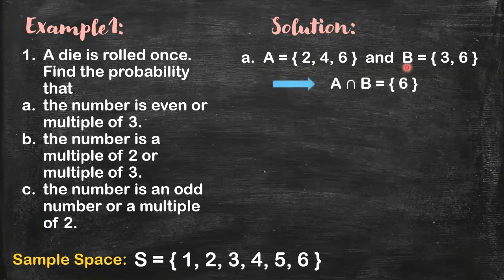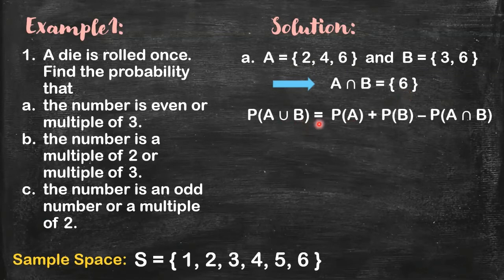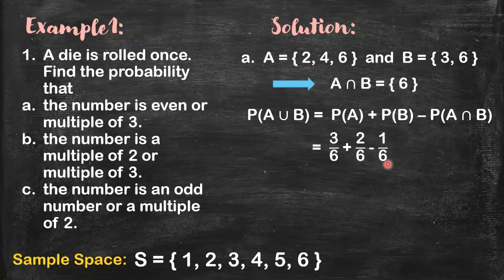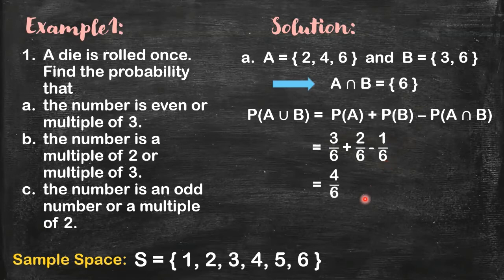And then what do you notice? They have an intersection. Their intersection contains 6. So that's why if I ask you to get the probability of A union B, we have this. What is the probability of A? Three elements in A divided by the number of elements in S. So you have 3 over 6. What is the probability of B? You have two elements in set B divided by the total number of elements in S. So you have 2 over 6 minus the probability of their intersection, which is 1 over 6. If you perform the indicated operations, you will get 4 over 6, and then you simplify, you will have 2 thirds. So this is your final answer.